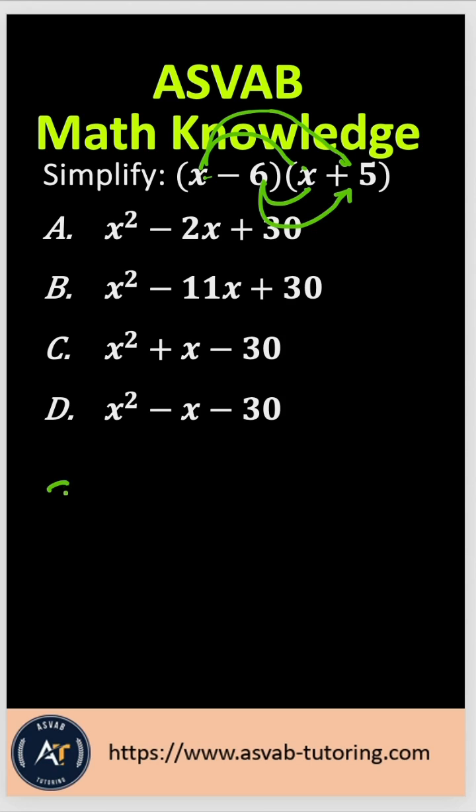x times x gives you x squared. x times 5 gives you plus 5x. Then negative 6 times x is negative 6x. Negative 6 times 5 is negative 30.